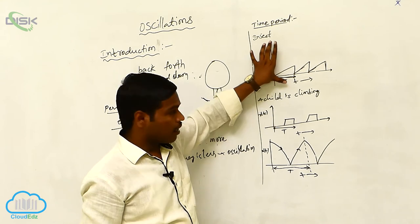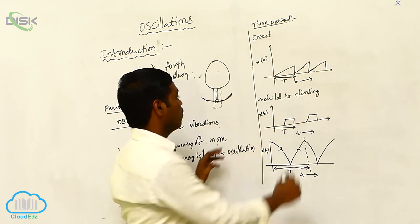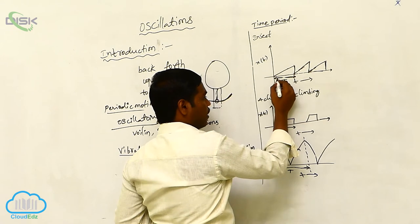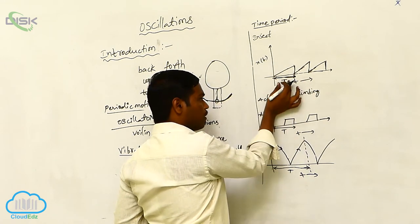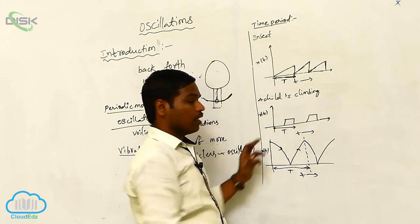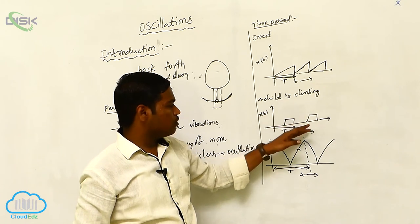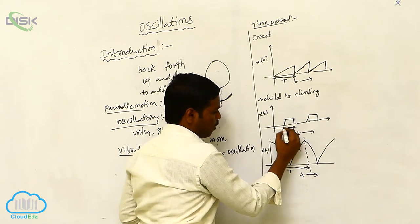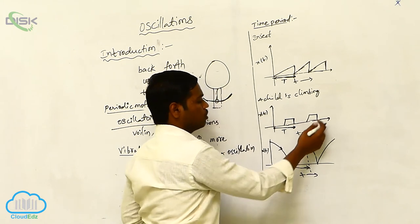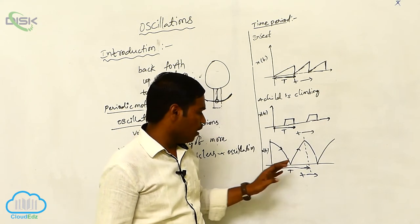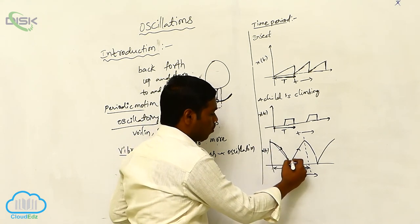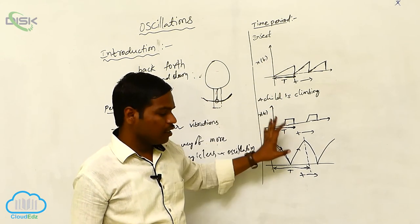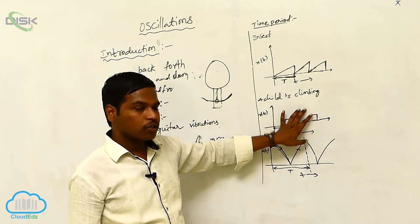To summarize the examples: the insect ramping up and falling, the child climbing and coming down, and the bouncing ball — all repeat their motions after a certain time. This time taken to repeat the same type of motion is called the time period.